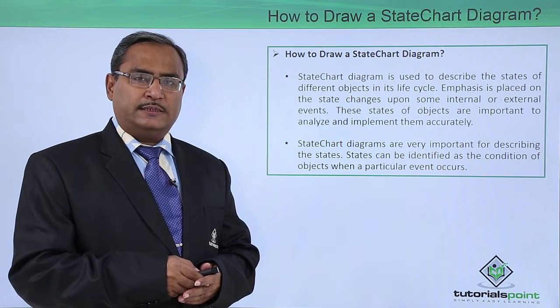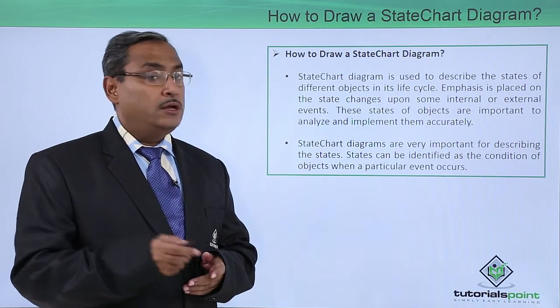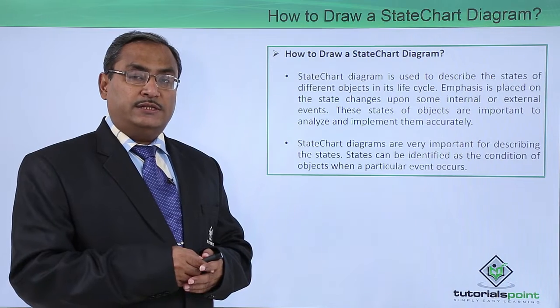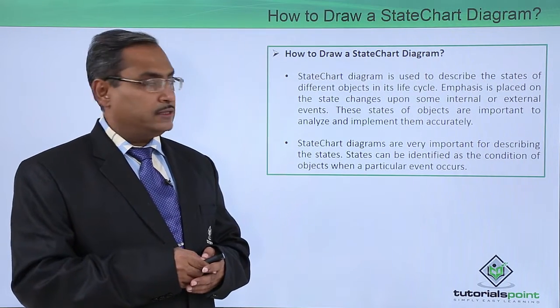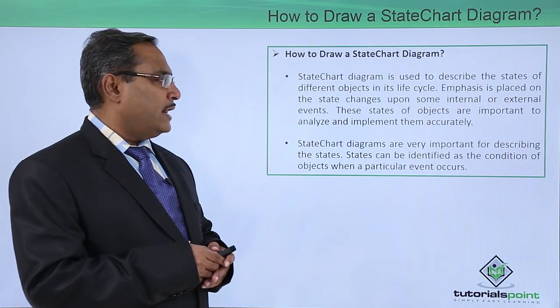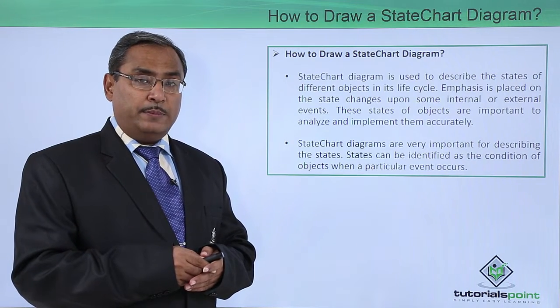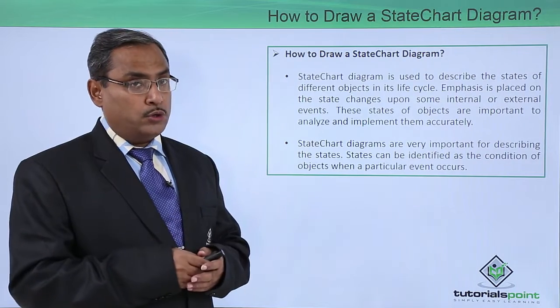Events may take place within the system boundary as internal events or some external events may take place. And depending upon that, the state of an object may have a transition from one state to another state. These states of objects are important to analyze and implement accurately. This particular dynamic view of the system will help the developer to develop the code accordingly.